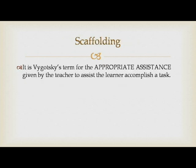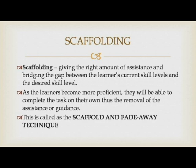Another key word — the main one — is scaffolding. It is Vygotsky's term for the appropriate assistance given by the teacher to assist the learner in accomplishing a task. Scaffolding is giving the right amount of assistance in bridging the gap between the learner's current skill levels and the desired skill level. As learners become more proficient, they will be able to complete the task on their own, thus allowing for the removal of the assistance or guidance. This is called the scaffolding and fade-away technique — once the learner already knows the desired level of performance, the assistance or guidance can already be removed.